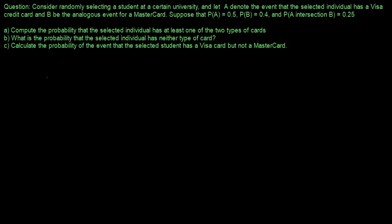Consider randomly selecting a student at a certain university. Let A denote the event that the selected individual has a Visa card, and B be the analogous event for a MasterCard. We're given that probability of A is 0.5, probability of B is 0.4, and probability of A intersection B is 0.25.